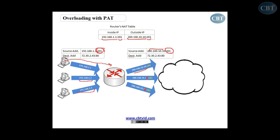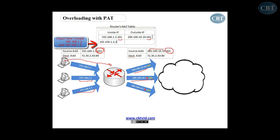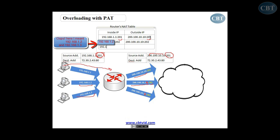If another computer, like 192.168.1.2, sends a request to the router to go out, the router will assign the same IP address but with a different port, and registers it in the NAT table. For example, 192.168.1.1 on port 202 sends a packet out, then the router assigns 200.100.10.10 on port 202. The third one, 192.168.1.1 on port 203, sends a request, and the router assigns the same address on port 203. In this way, the router can distinguish between different computers while assigning the same address to all.